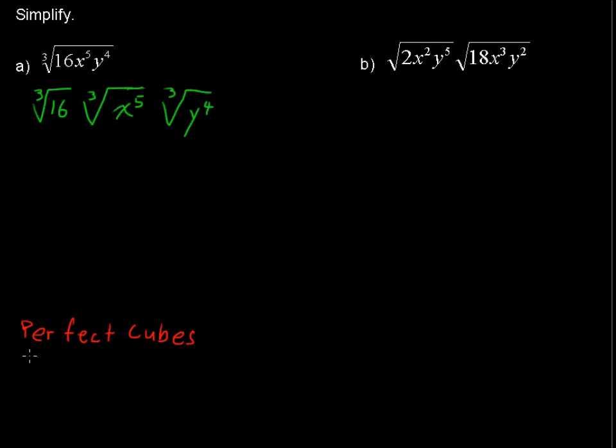So 1 to the third equals 1, 2 to the third equals 8, 3 to the third equals 27, and so on. 4 to the third is 64.